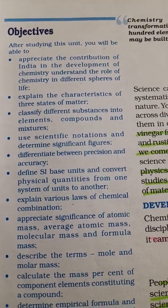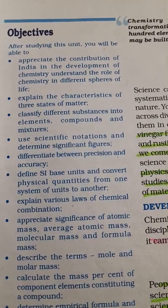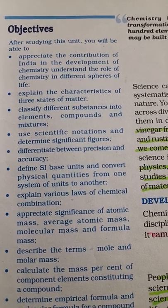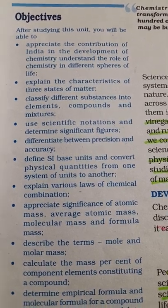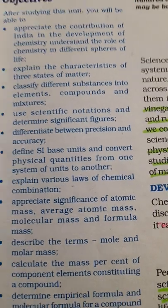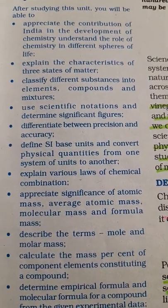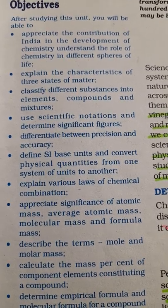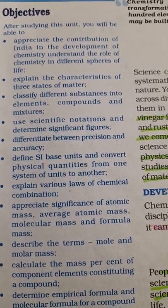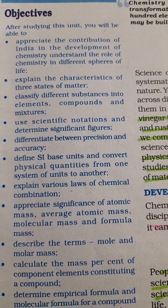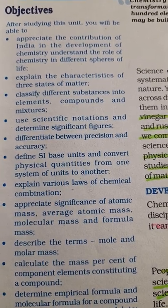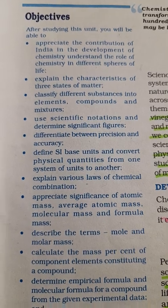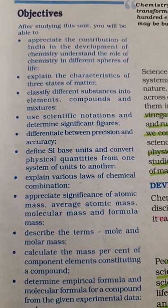Then, how do you use scientific notations, significant figures, rounding off and things for easy calculations. How do you differentiate between precision and accuracy. What are SI basic units, and how do you convert physical quantities from one system of units — SI system, CGS system, MKS system — to one another. Then, the different laws of chemical combination are explained in basic chemistry.